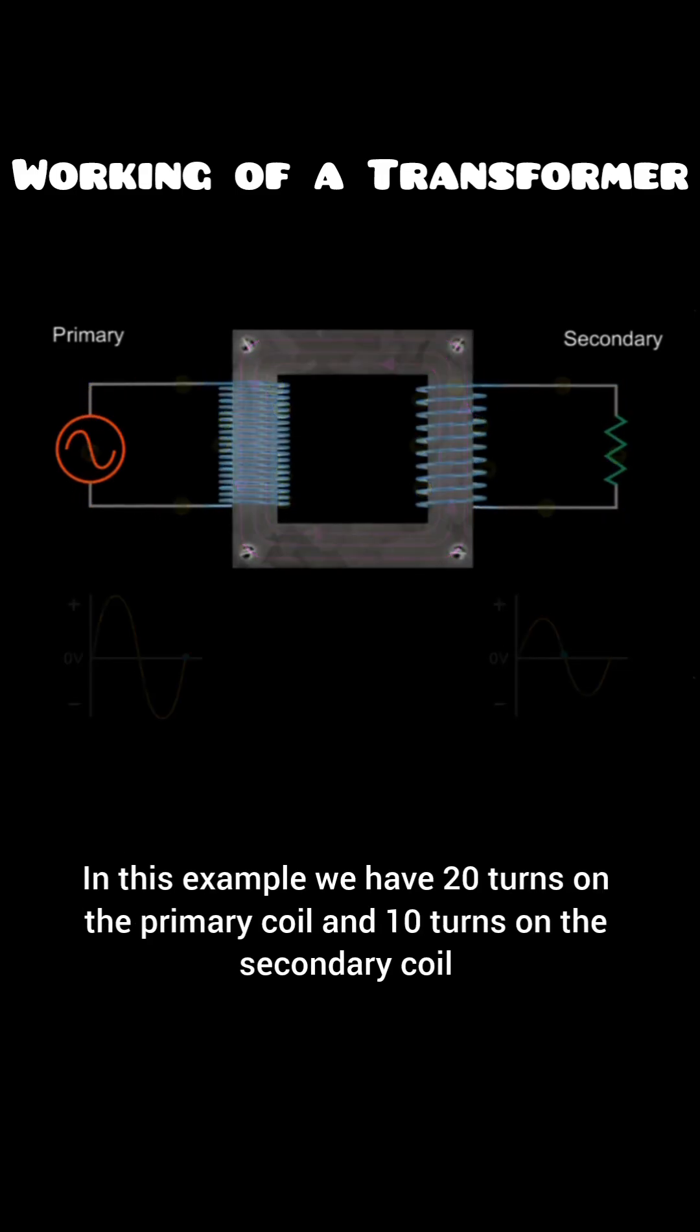In this example, we have 20 turns on the primary coil and 10 turns on the secondary coil.